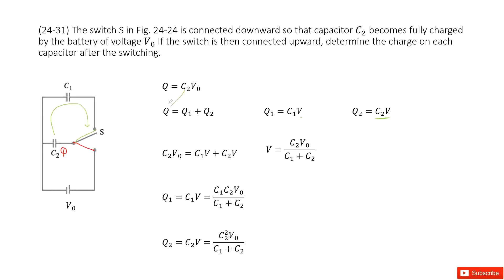Now we input Q, Q1, and Q2 into this equation and get an equation. From that equation you can get the function for V. Very easily, you can then get the charge on capacitor C1, which is C1 times the potential V. Similarly, you can get the charge for capacitor C2, which is Q2 equal to C2 times V. Thank you.